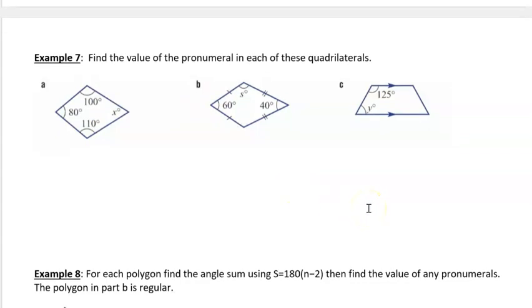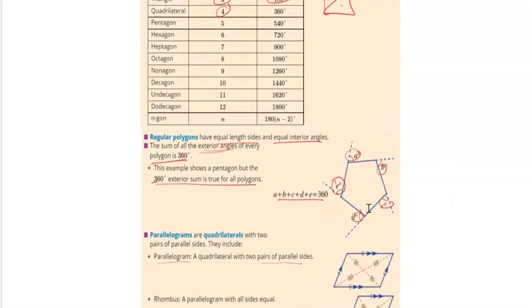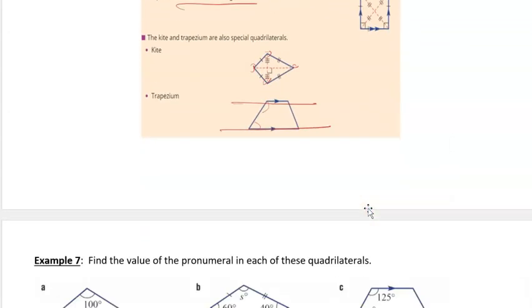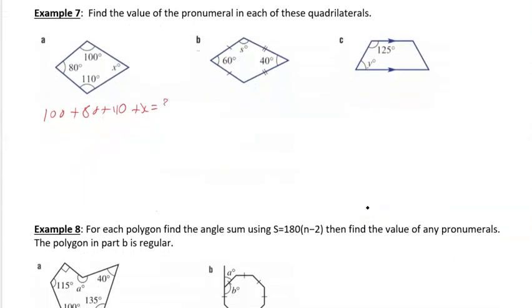What we've got is a quadrilateral, and 100 plus 80 plus 110 plus x is going to equal, let's go back and check, a quad is 4 sides minus 2, that's 360. So all of those interior angles are going to add up to 360. If we put them all together, what does that add up to? 180, 290 plus x equals 360. So x is going to be equal to 70 degrees, because they will all add up to 360.